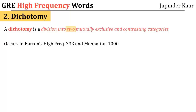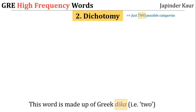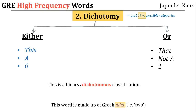A dichotomy is a division into two mutually exclusive and contrasting categories. The key word here is two, because the root word for dichotomy is the Greek word dika, which means two. So whenever you classify something such that there are only two possible categories to which the thing can belong — either this or that, either A or not A, either 0 or 1 — such classifications are known as binary or dichotomous classifications, or dichotomies.